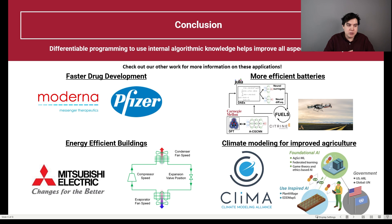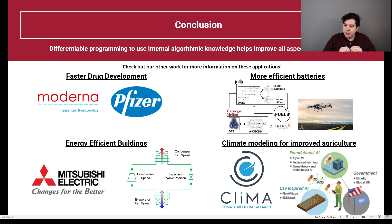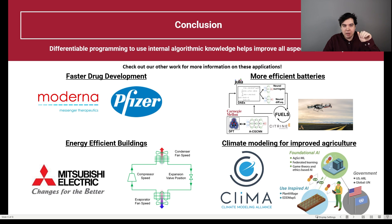In conclusion, what this is showing is that you really want differentiable programming — you want to differentiate algorithms — because they have knowledge and heuristics inside of them, and those heuristics are useful for what we're trying to do. Thank you very much.